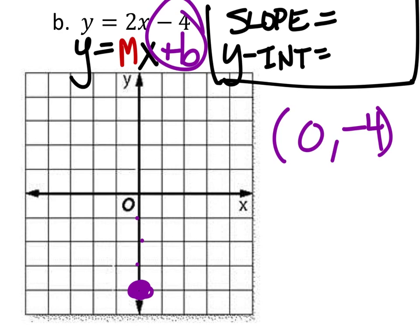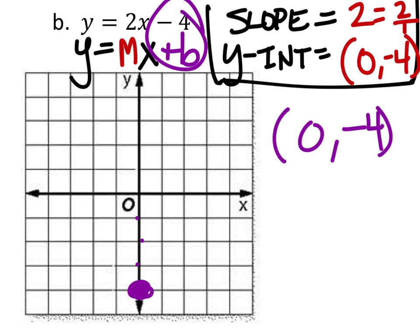And then I use the sloppage. The y-intercept is at 0, negative 4. Sloppage in this case is 2. Some of you guys may write 2 over 1, so it shows you the rise and the run. So if I'm here, I'd go up 2 and to the right 1. There's my sloppage — that's my next point.